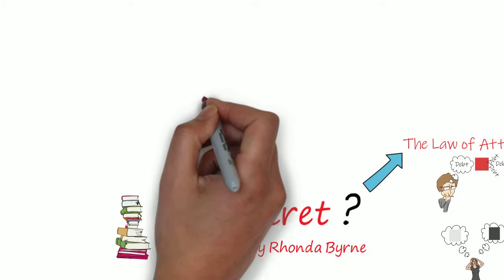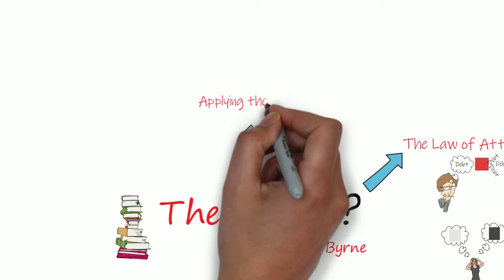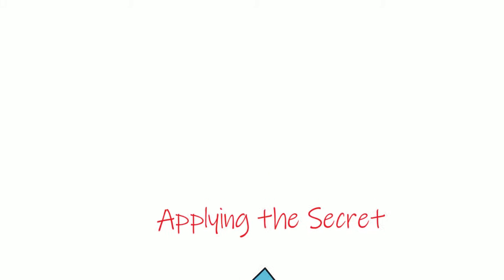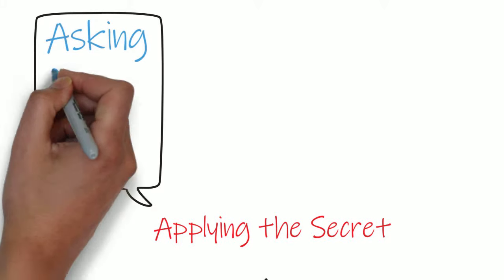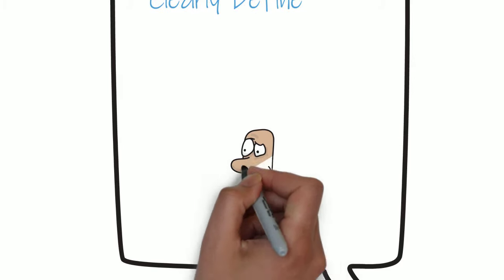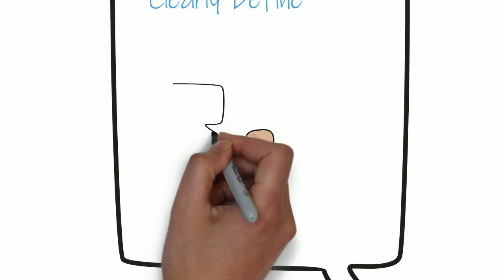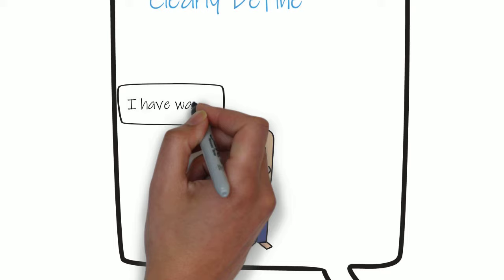Let's now look at how to apply the law of attraction in our life. This involves three main steps. Firstly, asking. You have to clearly define what it is you want. Let's look at my friend Ted here. He says, but hey, I already have things that I want and I haven't received them.